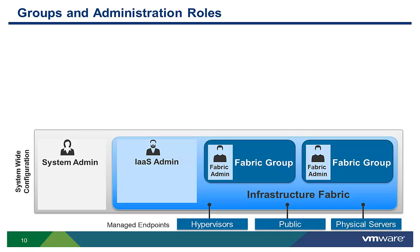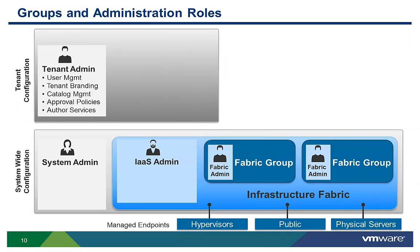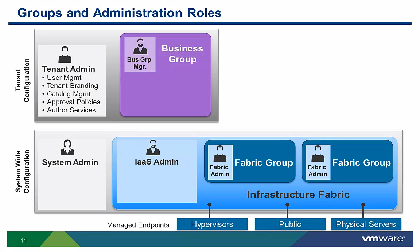Now let's look at business level administration and organizational grouping. Tenant administrators configure vCloud Automation Center for the needs of their organization. They are responsible for user and group management, tenant branding, and business policies such as approvals and entitlements. They also track resource usage by all users within the tenant and initiate reclamation requests for inactive virtual machines. Tenant admins are also responsible for subsetting users within their tenant by creating one or more business groups and assigning users to those groups.